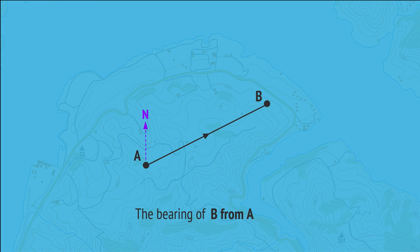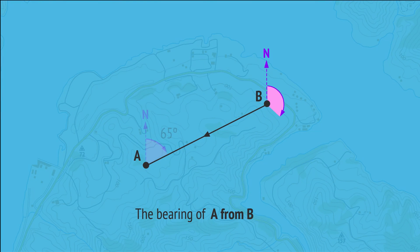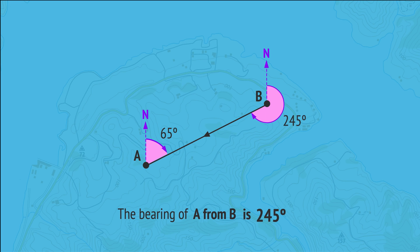Measuring the clockwise angle from north gives this bearing as 065 degrees. Now, if we're located at B and want the bearing needed to return to A — that is, the bearing of A from B — then we can use angle relationships to work this out from the original bearing. If we draw a line south from point B, we can identify these alternate angles, and by adding 180 degrees, we get the bearing of A from B is 245 degrees.